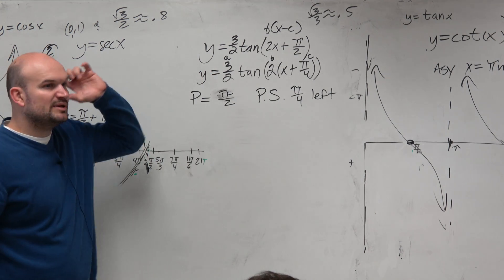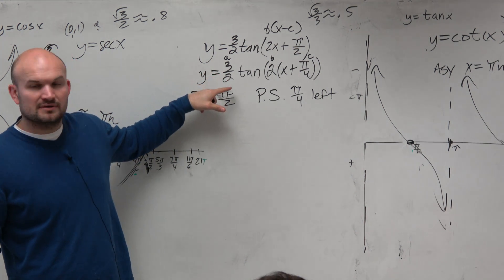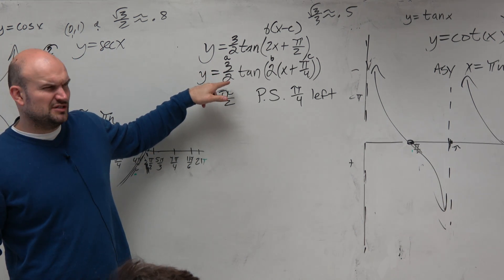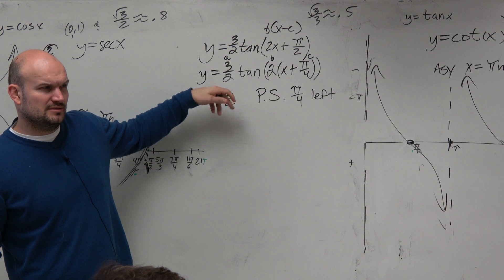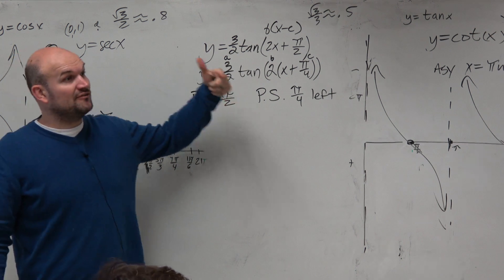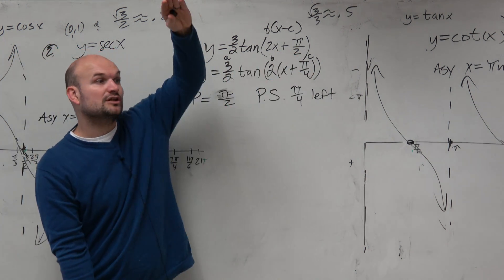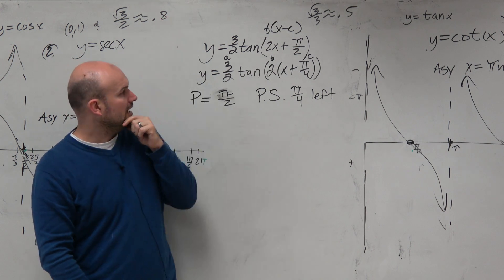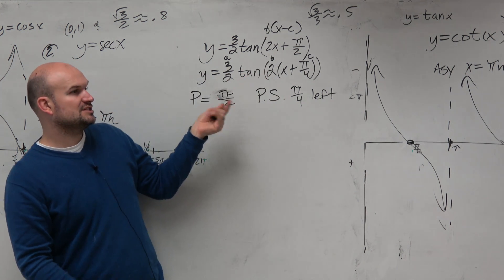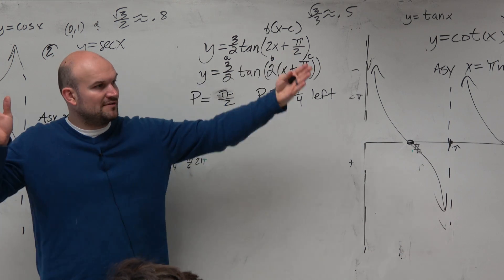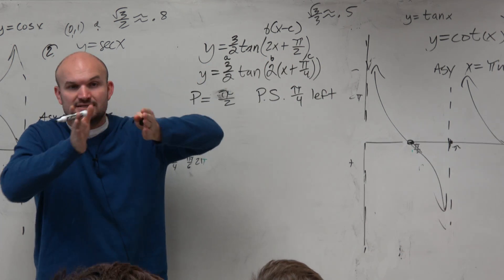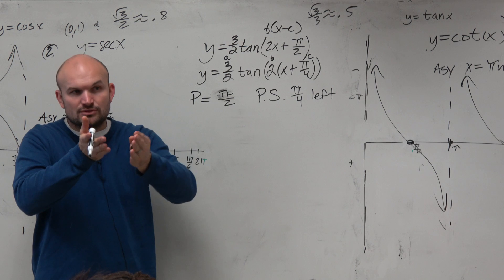Now, what could we understand about that 3 halves? What is that doing to the graph? It's a stretcher. It's a fraction larger than 1, so it's vertically stretching the graph. And then obviously the 2 we know is shrinking, because the period is now pi half, so the period is getting compressed. You could also think of the 2 as a horizontal compression.